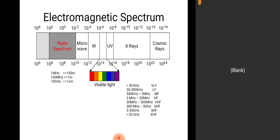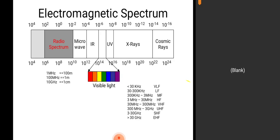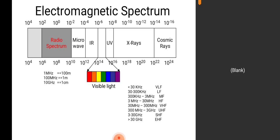If the frequency range is less than 30 kHz, it is termed very low frequency. From 30 kHz to 300 kHz is low frequency; 300 kHz to 3 MHz is medium frequency; 3 MHz to 30 MHz is high frequency; 30 MHz to 300 MHz is very high frequency; 300 MHz to 3 GHz is ultra high frequency; 3 to 30 GHz is super high frequency; and greater than 30 GHz is extremely high frequency. The visible light range is from 10¹⁴ to 10¹⁶ Hz. 1 MHz corresponds to 100 meters, 1000 MHz to 1 meter, and 10 GHz to 1 centimeter.